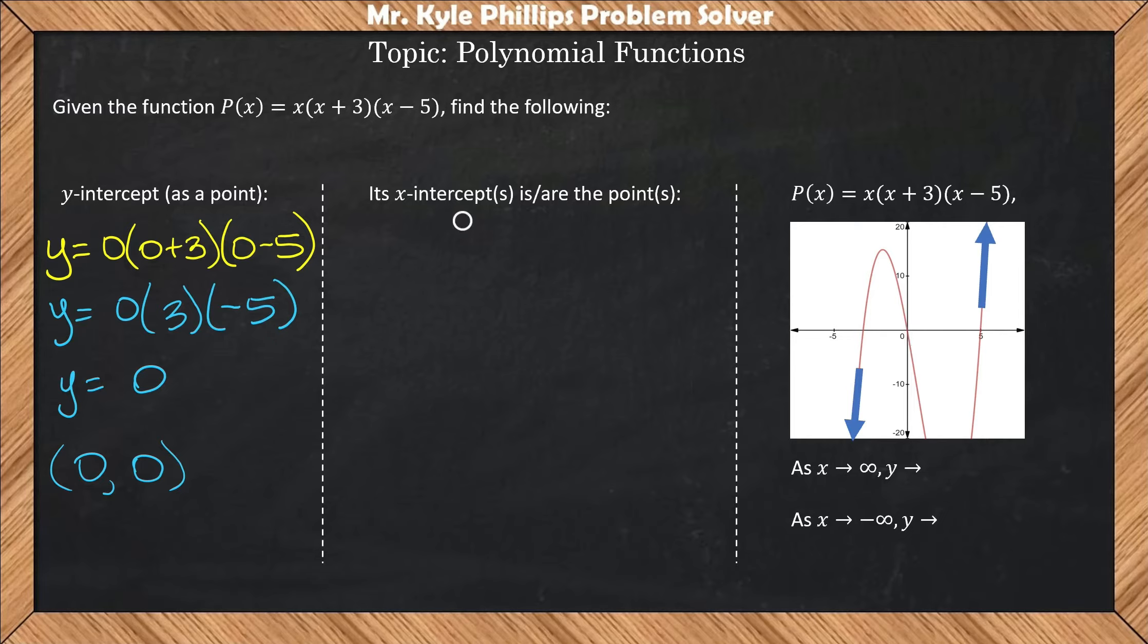Now it says the x-intercepts. So, in order to find the x-intercepts, we need to set this function equal to 0. So here, we have x times (x plus 3) times (x minus 5). We will set this equal to 0. Now, the great thing about having this in factored form is that in order to find the x-intercepts, we can set each factor equal to 0.